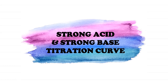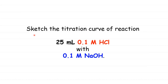Out of the three types of titration curve, we will look at two of them. The first one is the titration curve of strong acid versus strong base, which results in a neutral salt. The question asks us to sketch the titration curve of the reaction between 25 mL of 0.1 M HCl and 0.1 M NaOH. The HCl with known volume will be the analyte, while sodium hydroxide with unknown volume will be the titrant.